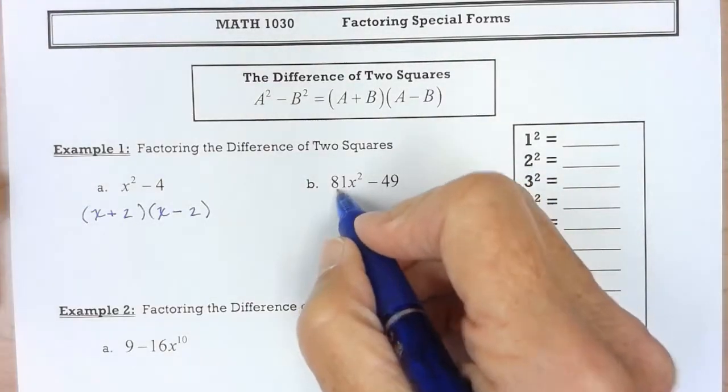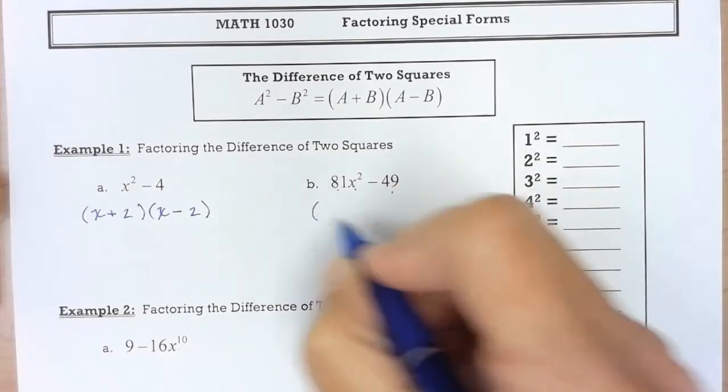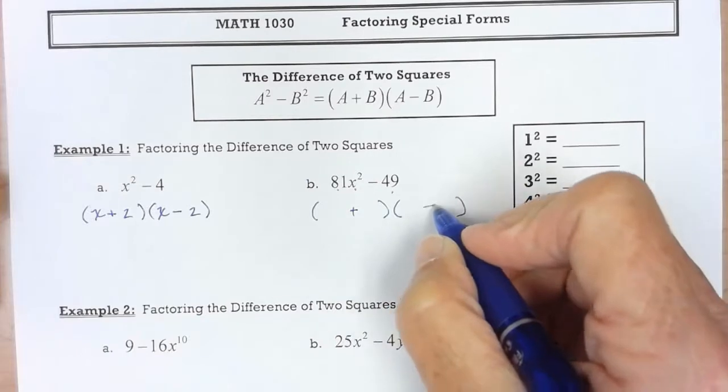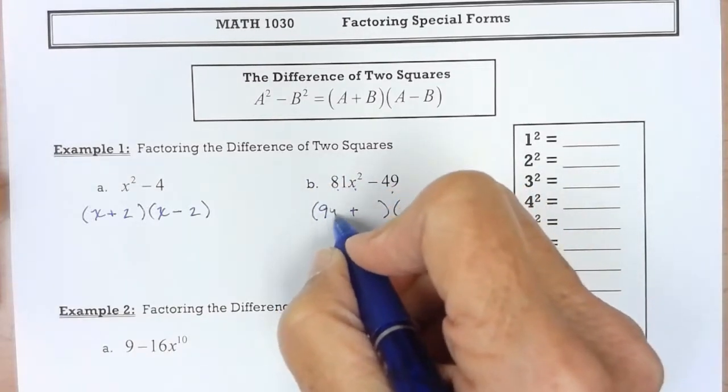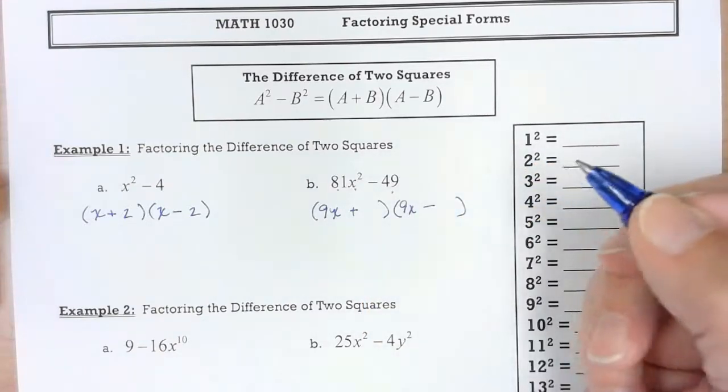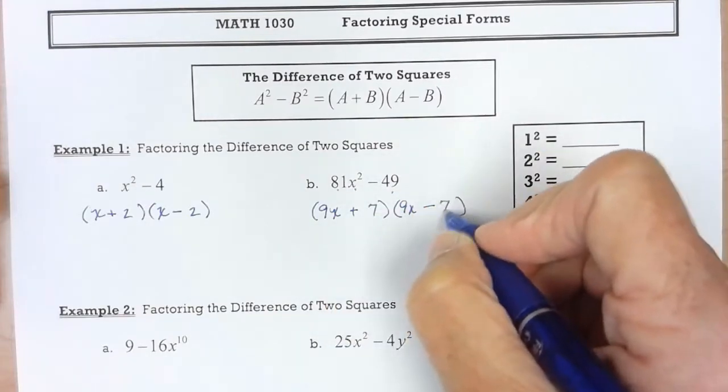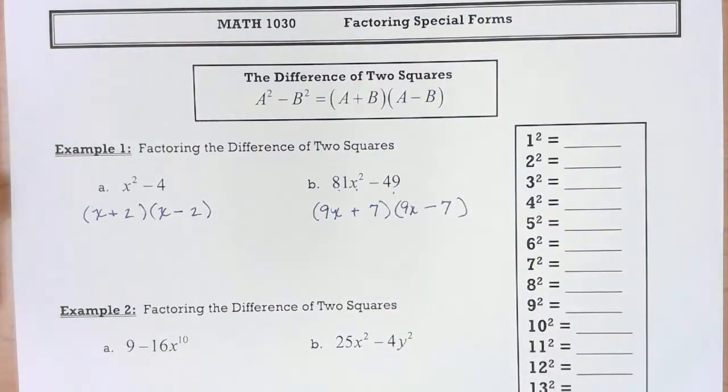In this one, that's a perfect square, as is that number. So let me do my two parentheses, a plus and a minus. Square root of 81 is 9. Square root of x squared is x. The 9x has to be in the front end of the parentheses. Square root of 49 is 7. So that's what I mean, looking at the numbers and knowing if they're perfect squares.